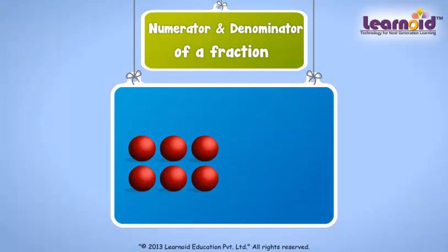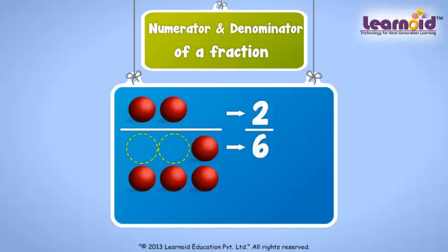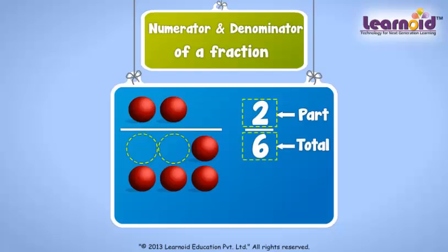For example, 2 out of 6 balls. We write this in fractions as 2 by 6. The number on top of the line is the part — in this example, 2 balls. The number at the bottom of the line is the whole or total — here it is 6.